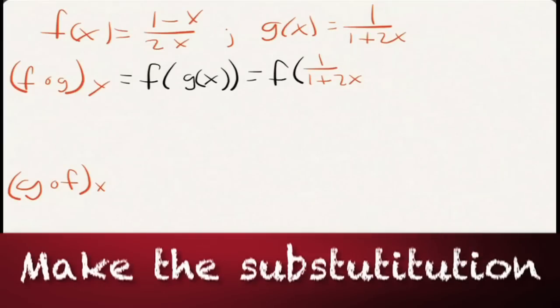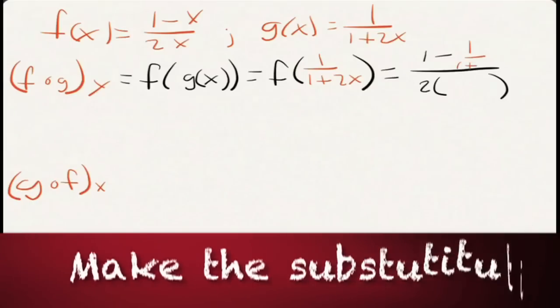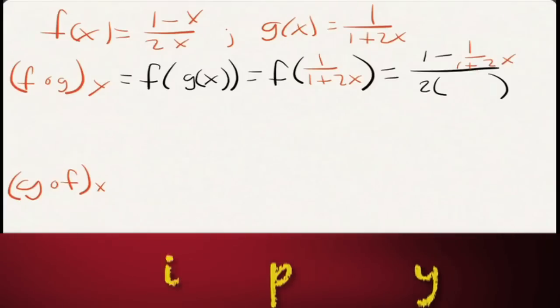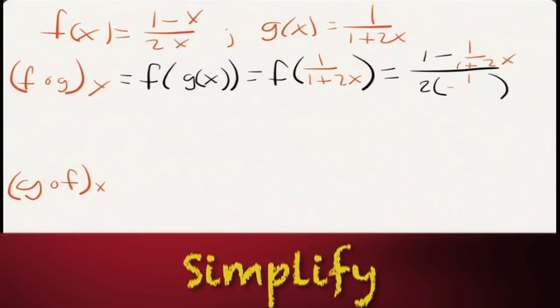And then what's next? Everywhere in f we see an x, we put that guy. So we go and we do that. I'm going to write my f devoid of the x's. And then everywhere I see an x, I'm now going to put a 1 over 1 plus 2x. And then here I'm going to put a 1 over a 1 plus 2x.